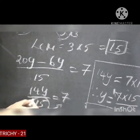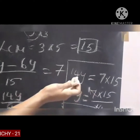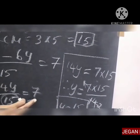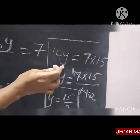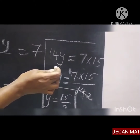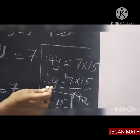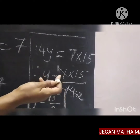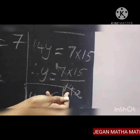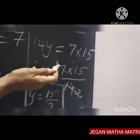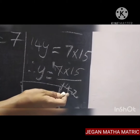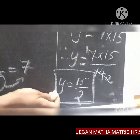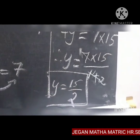Transfer this 15 to the right hand side. So 14y equal to 7 into 15; the denominator comes to this side means it is in the numerator. We want to find out only the variable value. Keep y only here — this 14 comes to this side, meaning it goes to the denominator place. So y equal to 7 into 15 divided by 14. Do the cancelling by 7 table: here 1 and 2, so the denominator is 2. Finally, the value of this variable y equal to 15 by 2.